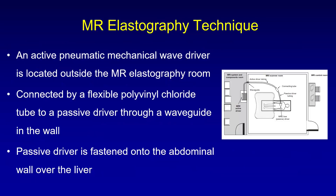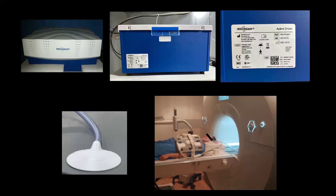The MRE technique involves using an active pneumatic mechanical wave driver located outside the MR room, as shown in the cartoon on the right. It is connected by a flexible polyvinyl chloride tube to a passive driver through a waveguide in the wall of the room. The passive driver is fastened onto the abdominal wall over the liver. The top two images show the active drivers — Resoundant is currently the only company I'm aware of providing hardware for MRE — and the bottom left shows the passive driver, that oval-shaped structure placed on the patient's abdomen.